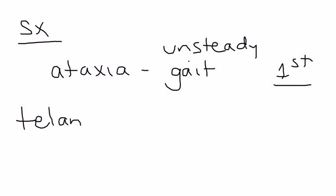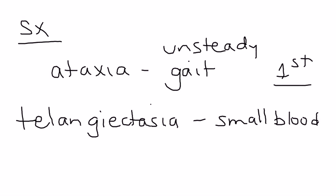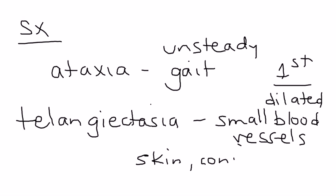The next one is the big long word, telangiectasia. I encourage you to look this up on the internet to see what this looks like. They're basically small dilated blood vessels, and they can appear on the skin or they can appear on the conjunctiva. They're pretty characteristic.